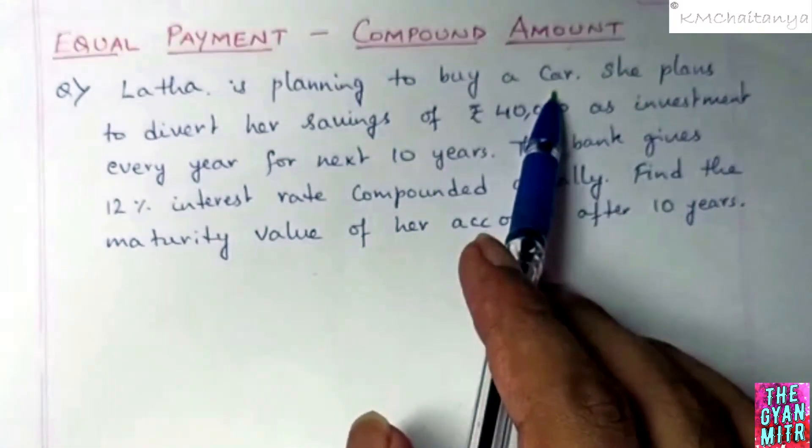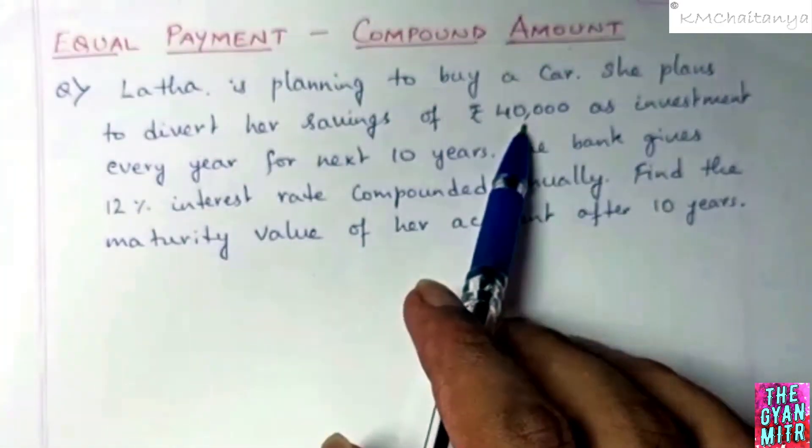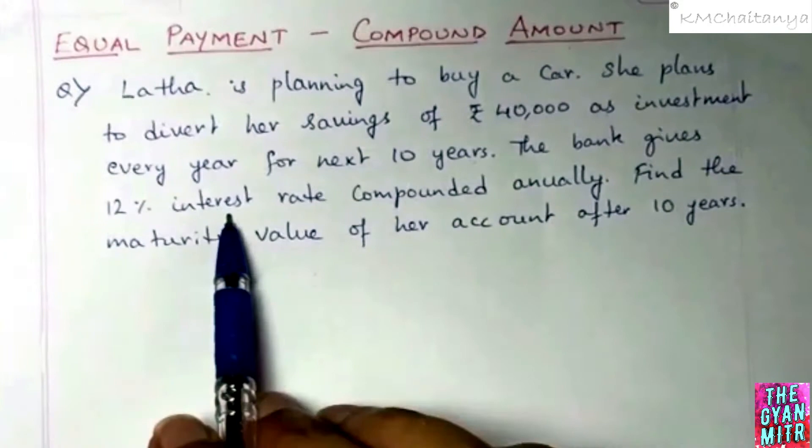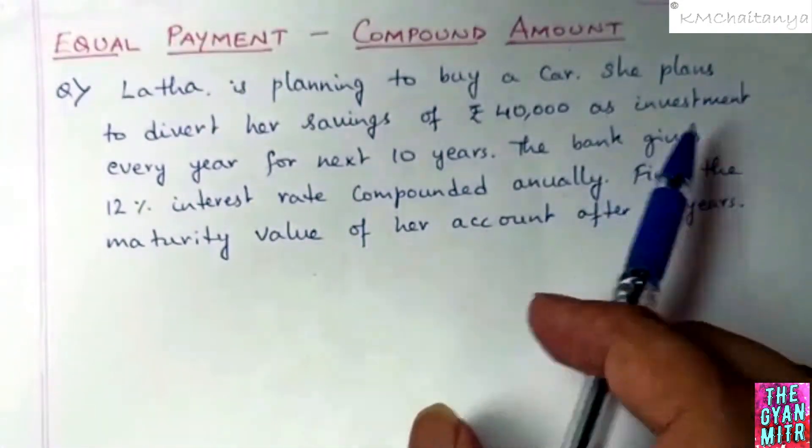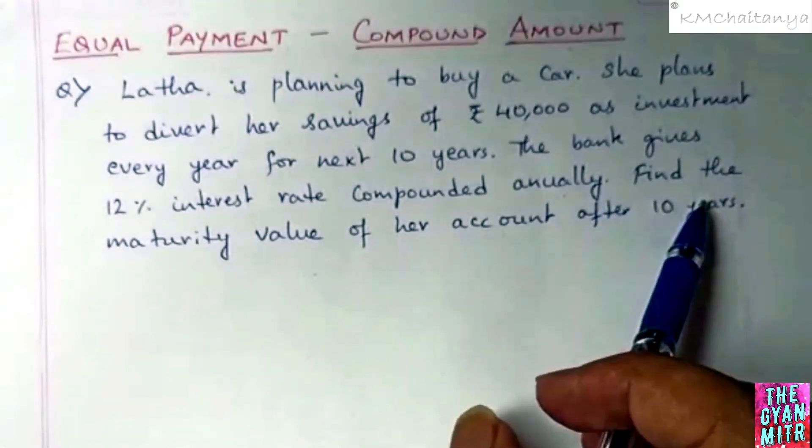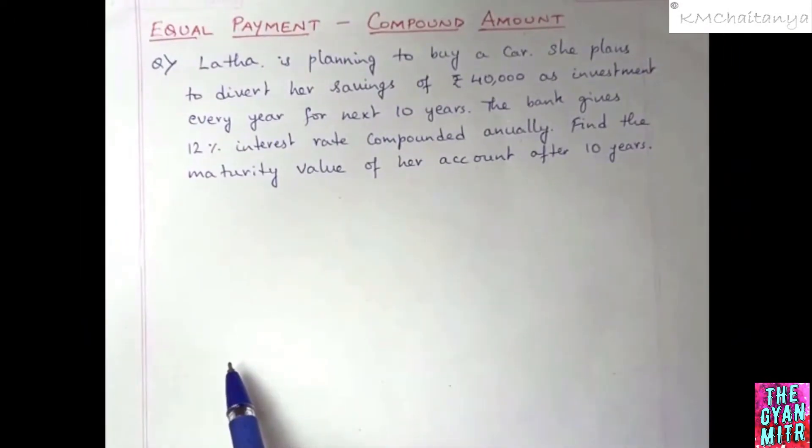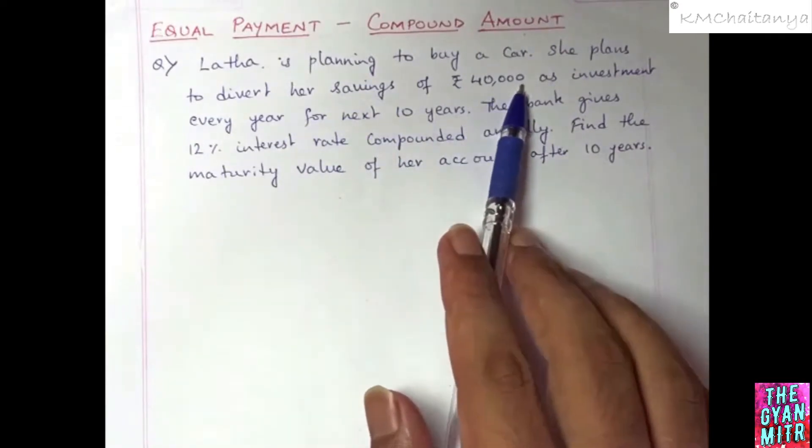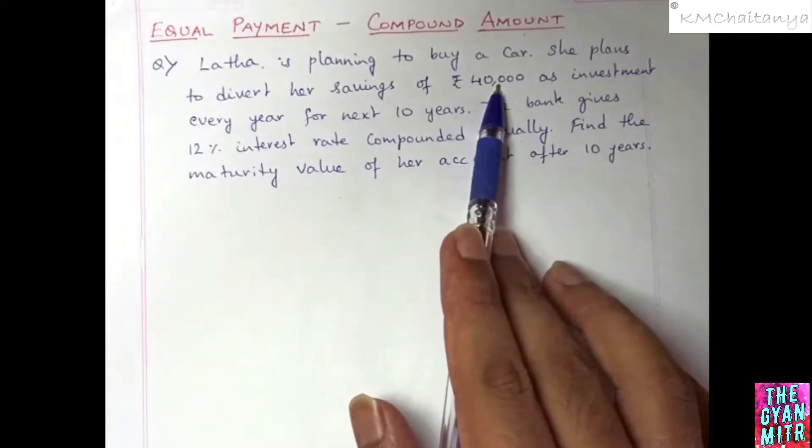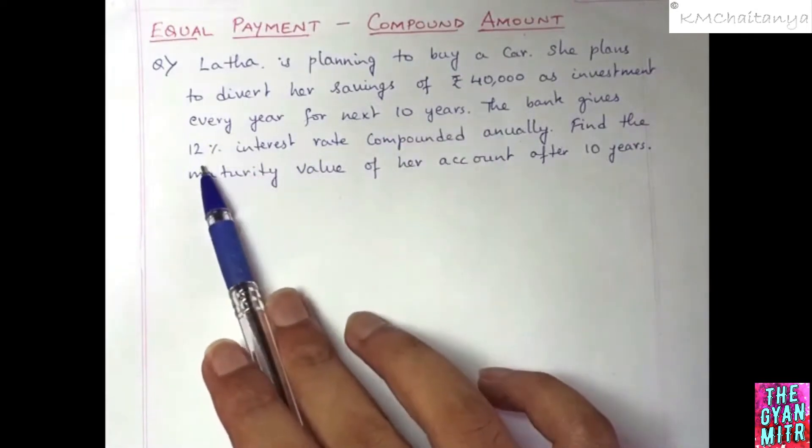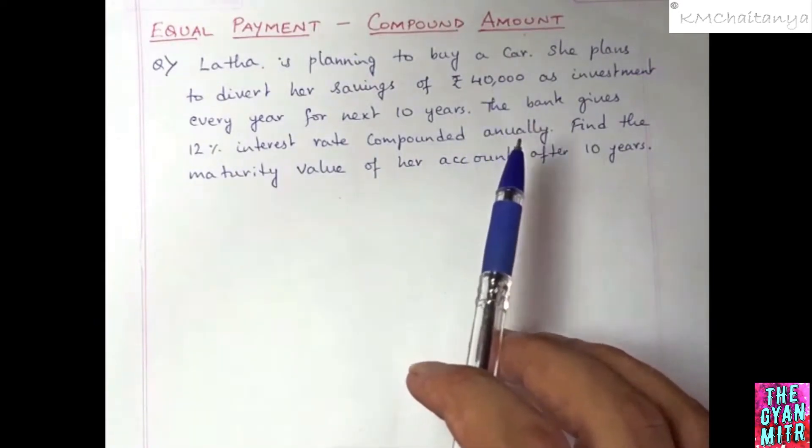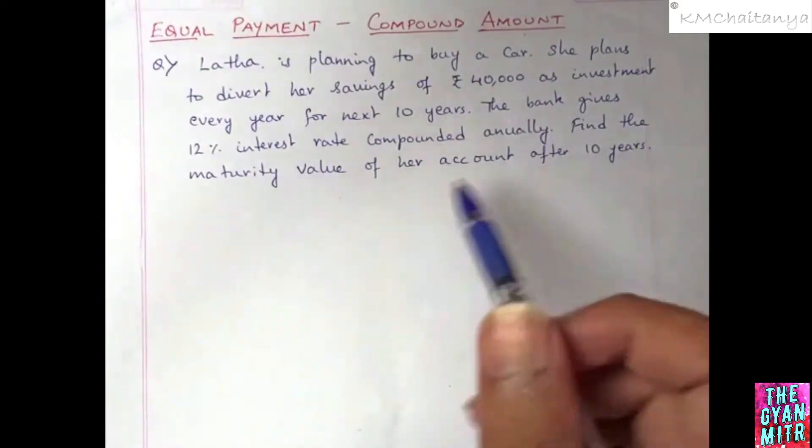Now let's solve a problem on equal payment compound amount. Latha is planning to buy a car. She plans to divert her savings of Rs 40,000 as investment every year for next 10 years. The bank gives 12% interest rate compounded annually. Find the maturity value of her account after 10 years. So Latha is planning to purchase a car. She is depositing Rs 40,000 into her bank account for 10 years, and this bank is giving 12% interest rate. So we want to calculate how much she is going to accumulate after 10 years.